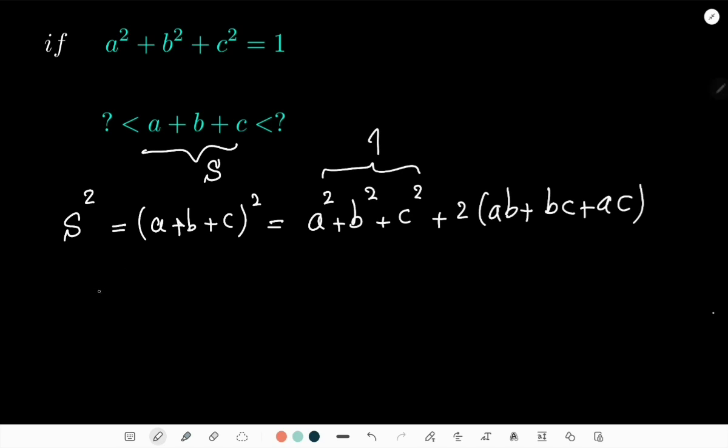Generally speaking, we also have the following inequality: a minus b to the power of two plus b minus c to the power of two plus a minus c to the power of two is always greater than or equal to zero.